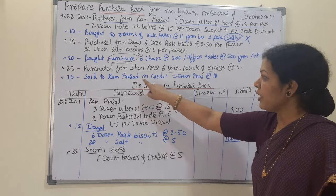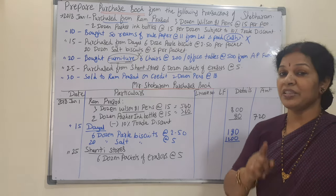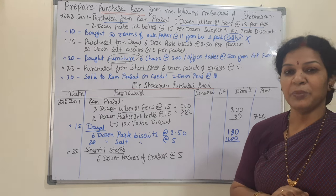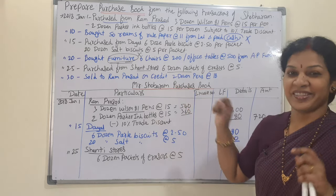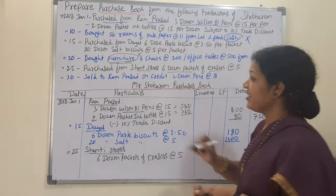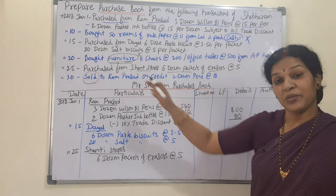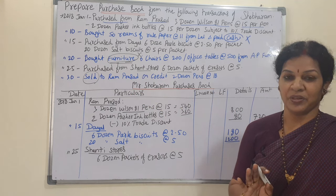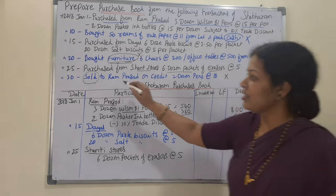On the 30th: sold to Ram Prasad on credit — two dozen pens at the rate of 18 rupees. We are not going to consider this because it is a sales transaction. This goes into the sales book, not the purchase book. So we ignore this entry as well.